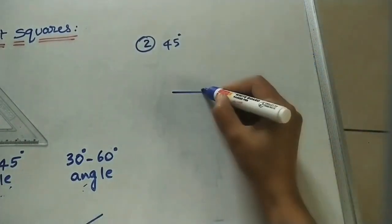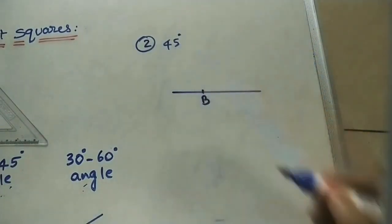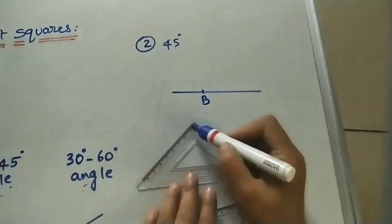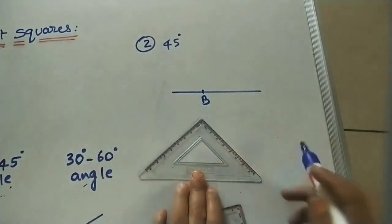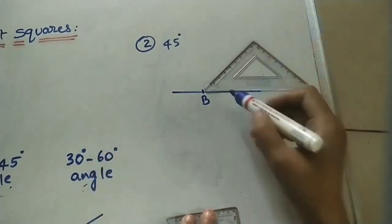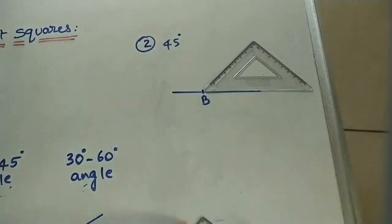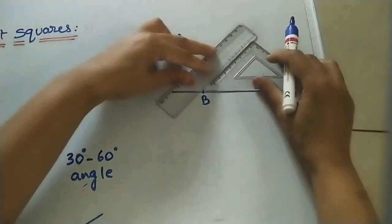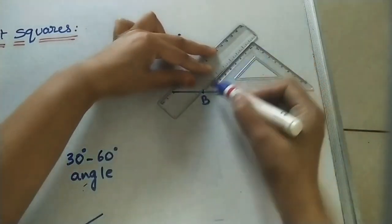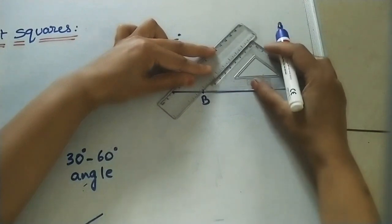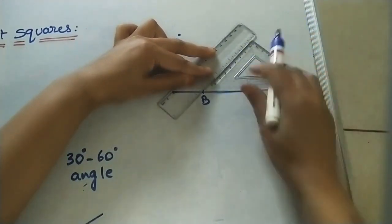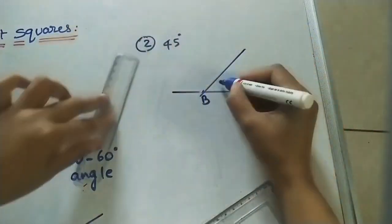Next, let us mark 45 degrees. Draw a horizontal line and assume we have to mark 45 degrees at point B using set squares. This set square has angles 90, 45, and 45. I am keeping it near B so this line coincides with one side. Take the scale and keep it on the slope, adjusting so it passes through B and this side coincides with the line. Remove and join — this is a 45-degree line.